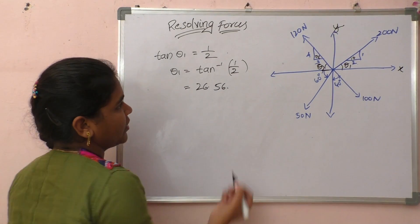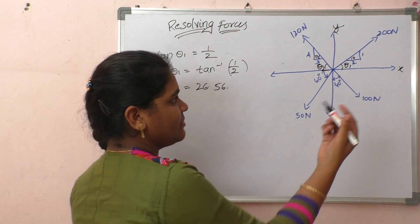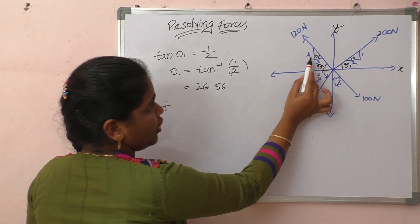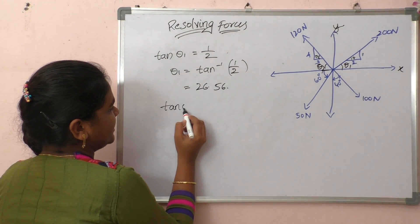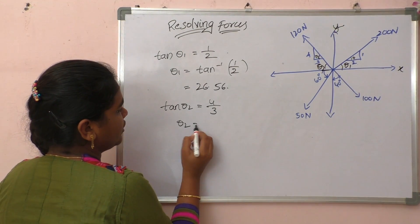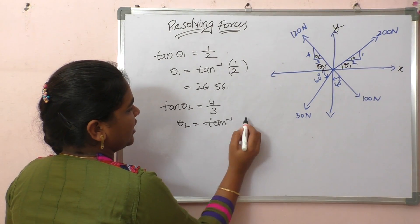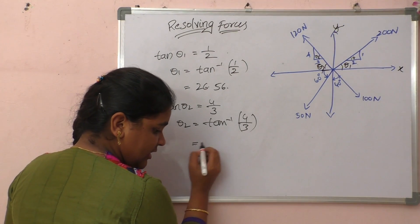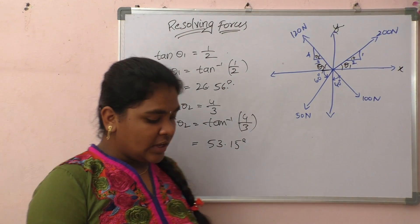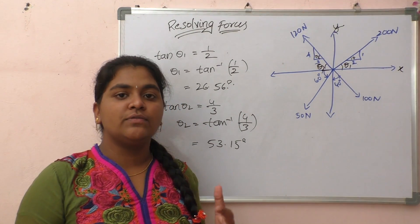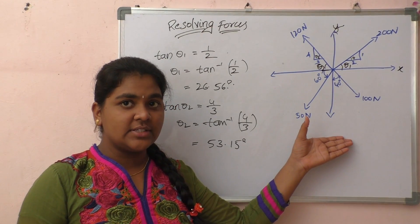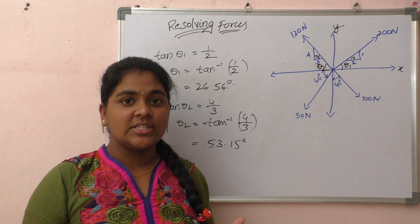In a similar way, tan(theta2) equals 4/3, and the value is around 53.15 degrees. Now we know the angles made with the x-axis and y-axis for all four given forces. The next step is how to resolve them.